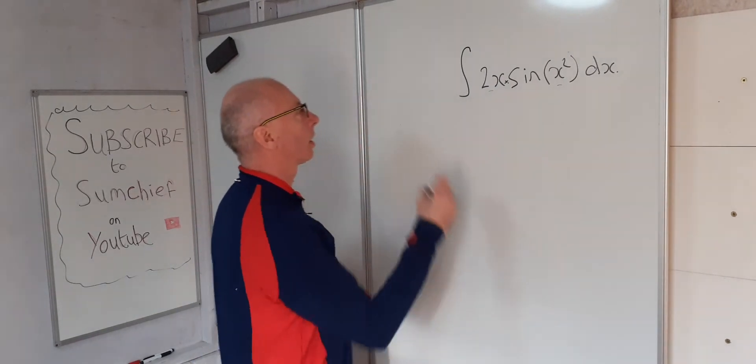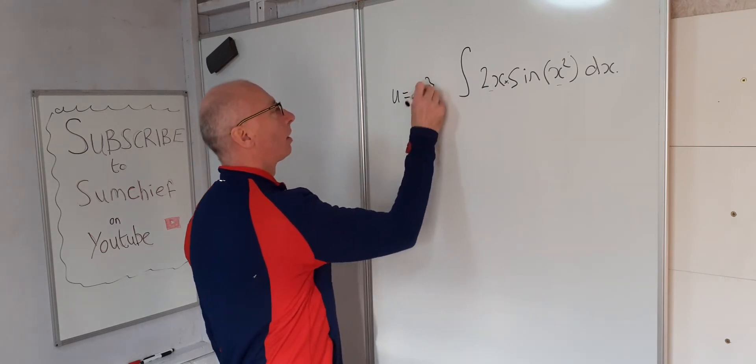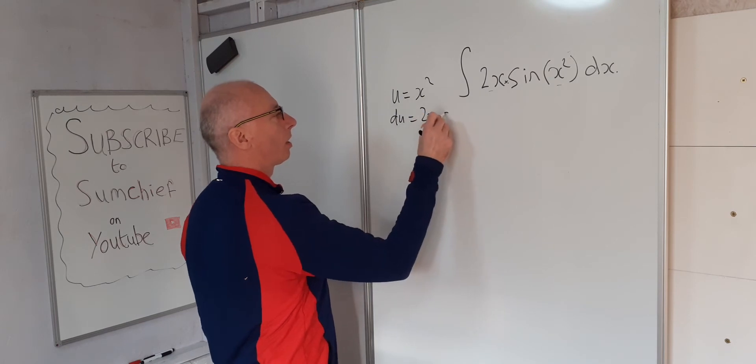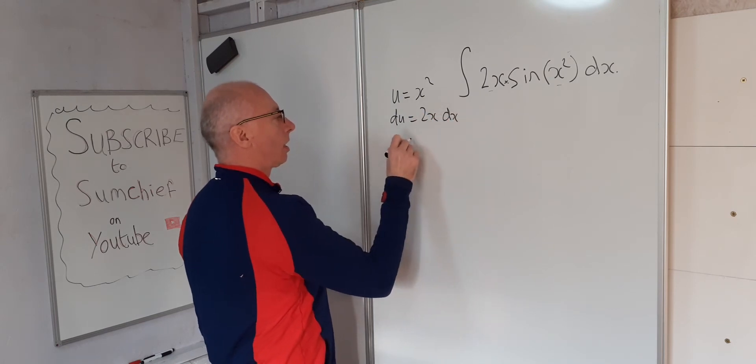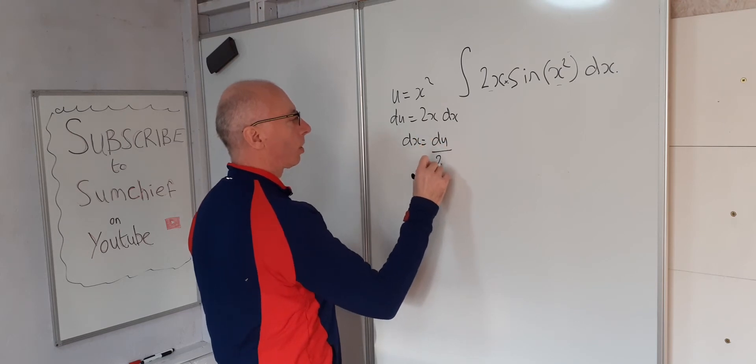So u substitution is looking like a good thing. Let u equal x squared, du is 2x dx, so dx equals du over 2x.